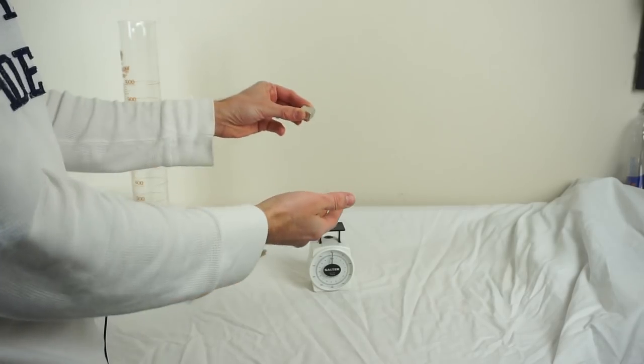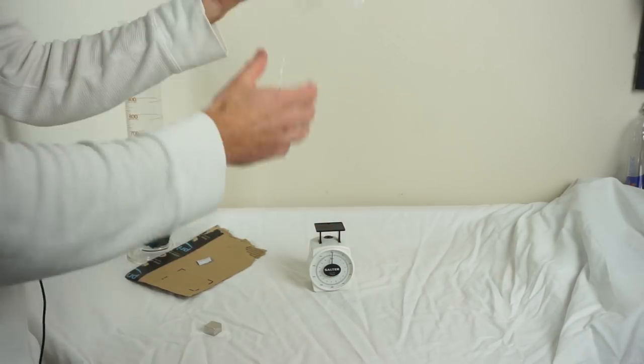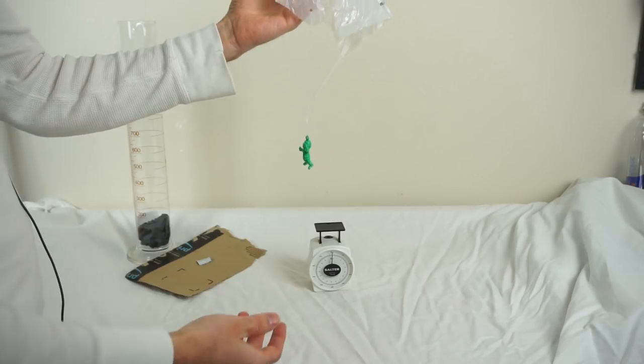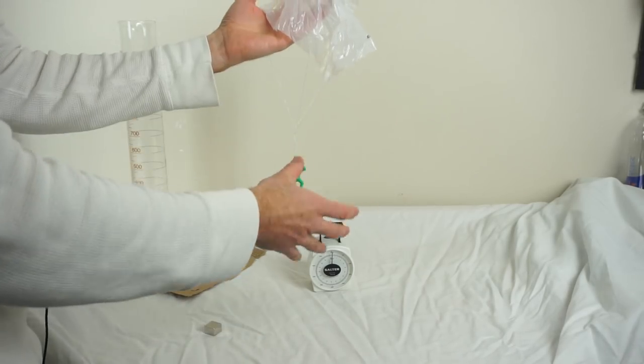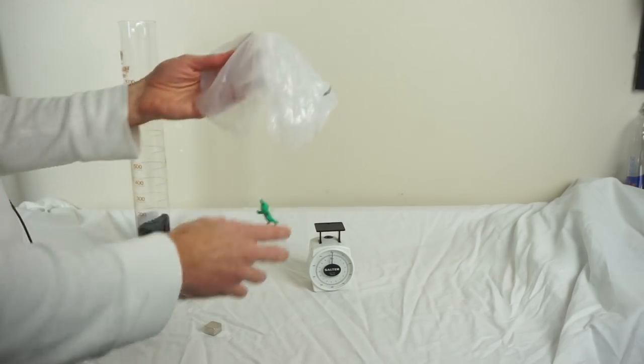So it seems pretty intuitive that when this is dropping it doesn't register the weight on the scale. But what about when we drop something that has a lot more air resistance like this parachute guy. So I'm going to use a bigger cylinder and a bigger scale and I'll do the same experiment that I just did here. Let's see what happens.